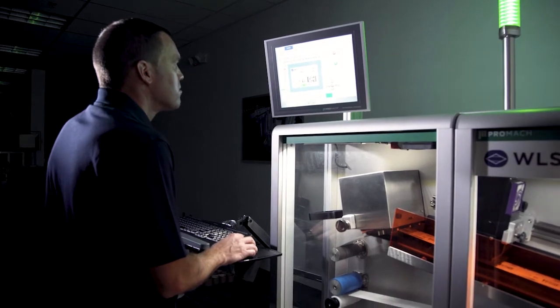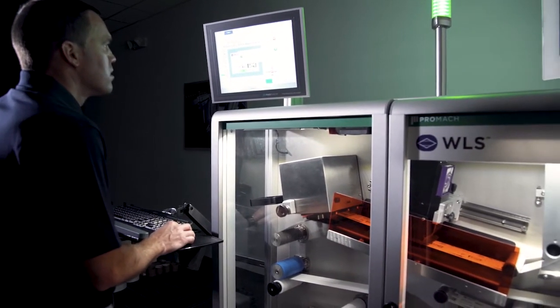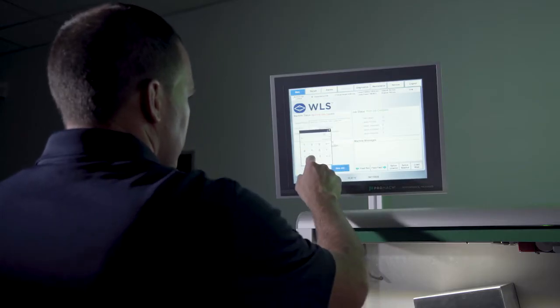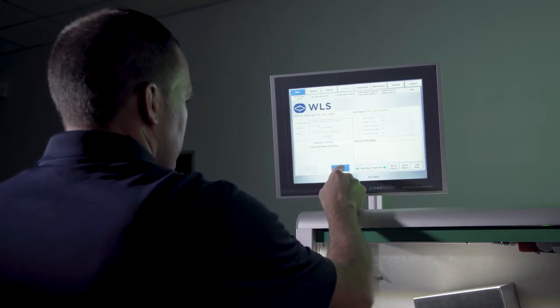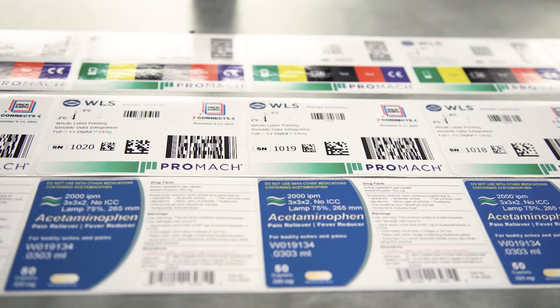You do not need a press operator to run the Autonomy. It's as simple to operate as a labeler with seamless recipe selections for print jobs and easy label material changes. We can print on a wide variety of label materials, from paper to films and many other substrates.